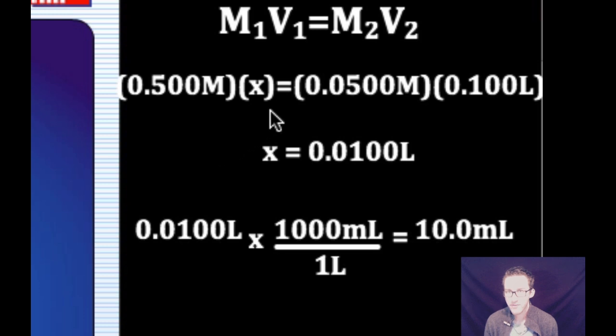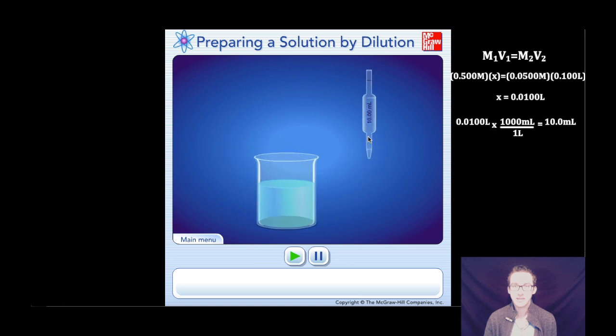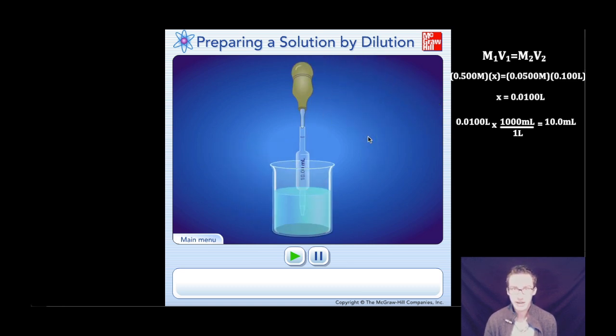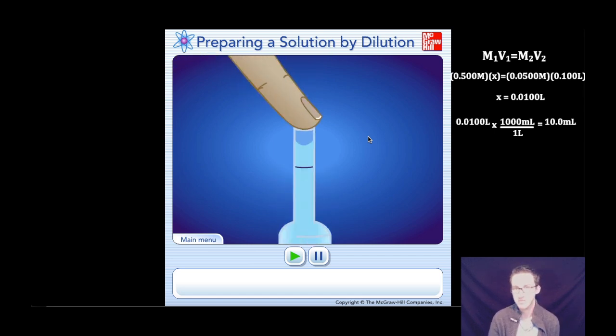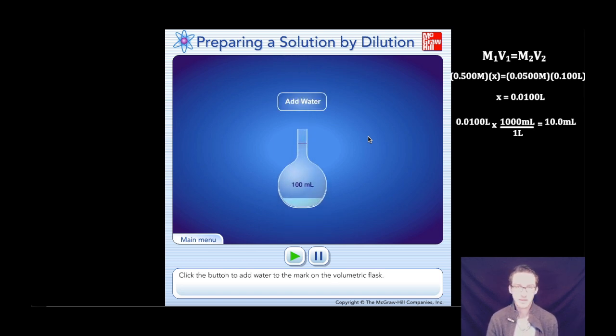This is my X, right? So this is what volume of my initial concentrated solution I need. I need 10 milliliters of it to make 100 milliliters of a 0.05 molar solution. So I'm going to select the 10 milliliter graduated pipette. Check out this awesome lab technique. We're going to get exactly 10.00 milliliters.